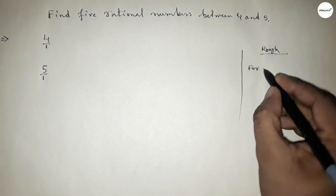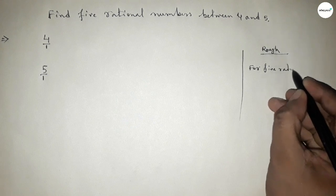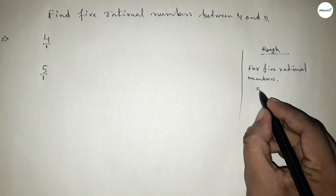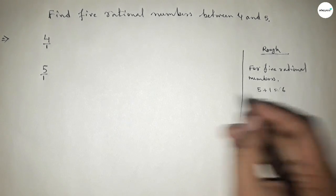For five rational numbers between any two numbers, we have to multiply by 5 plus 1, equal to 6, both numerator and denominator.